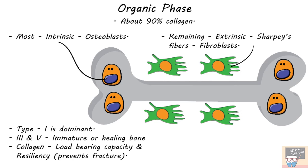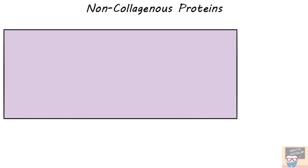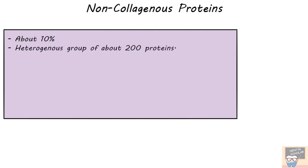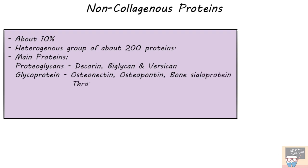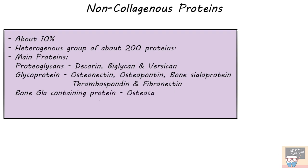Apart from collagen, there are non-collagenous proteins forming about 10% of the organic phase. These are a heterogeneous group of about 200 proteins. The main ones include: proteoglycans such as decorin, biglycan, and versican; glycoproteins like osteonectin, osteopontin, bone sialoprotein, thrombospondin, and fibronectin; bone GLA-containing proteins like osteocalcin; and serum proteins like albumin.